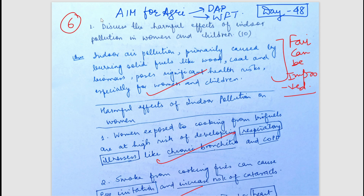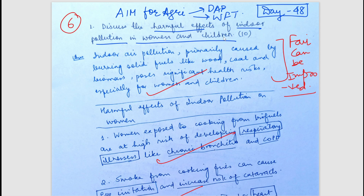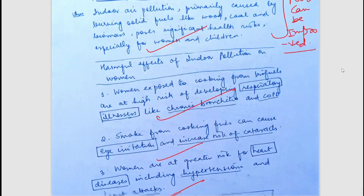The first question is: discuss the harmful effects of indoor pollution on women and children. Indoor pollution can come from burning various kinds of fuels, especially in rural areas where women use fuels like wood and cow dung, creating a lot of smoke that is inhaled and causes several lung diseases and other illnesses in both women and children.